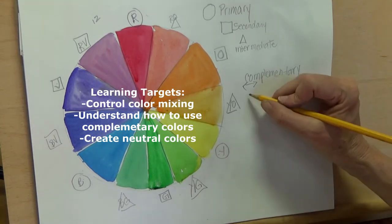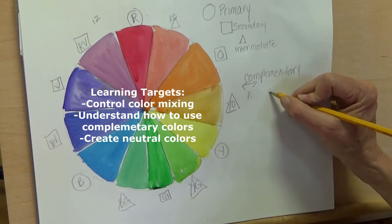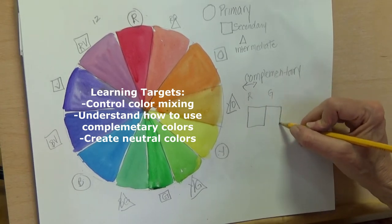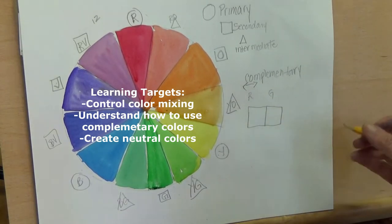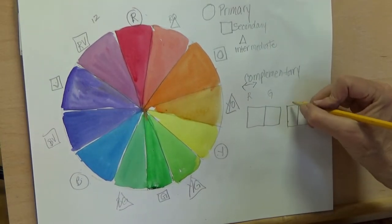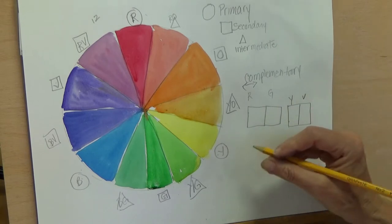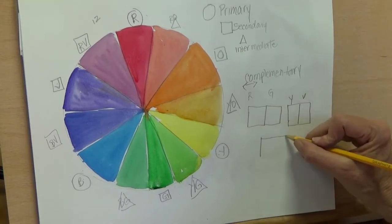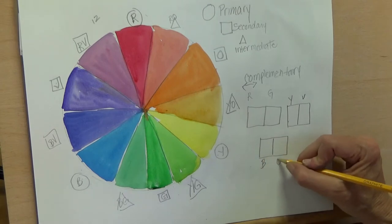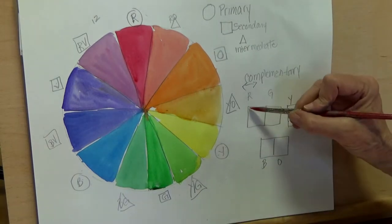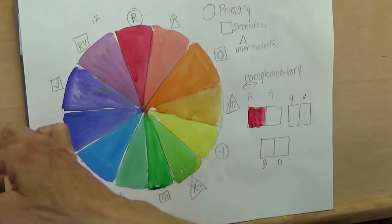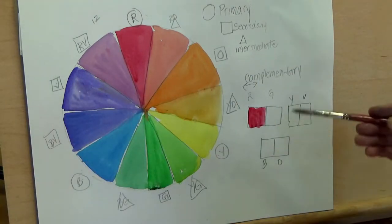Complementary colors are directly across from each other on the color wheel. We have red and green right across from each other, blue and orange across from each other, and yellow and purple or violet. Purple and violet to me are interchangeable, violet sounds cooler though.